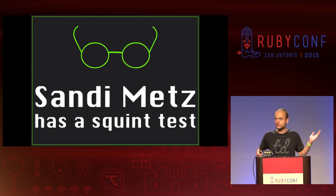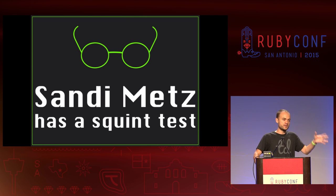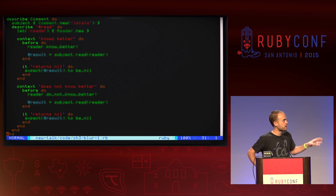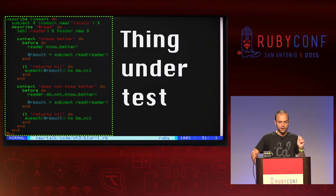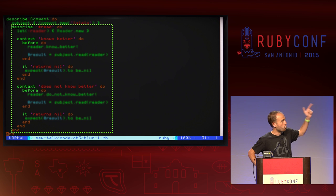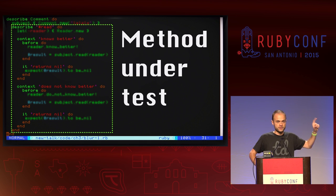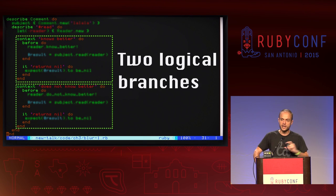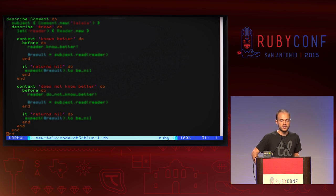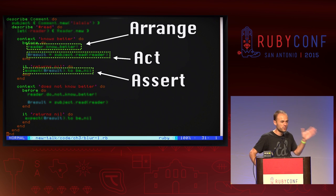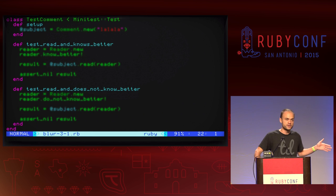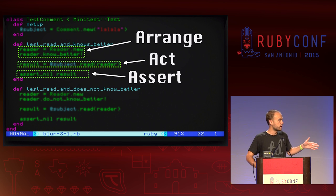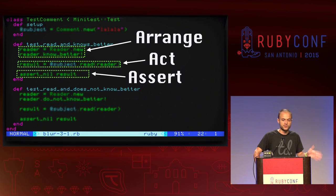Sandy Metz has a thing called the squint test that helps her understand really big file listings. When I'm reading your test suite, I really hope I'm able to, at a glance, understand what's the thing under test — where are all the methods, are they in order, are they symmetrical, is it easy to find all the tests of just one method? I like to use 'context' in RSpec to point out every logical branch and all subordinate behavior underneath each logical branch. It's very easy to organize this way. If I'm using an XUnit-style tool like Minitest, at least I want to see arrange, act, assert really straightforwardly throughout every file listing, and the names of the tests should mean something.